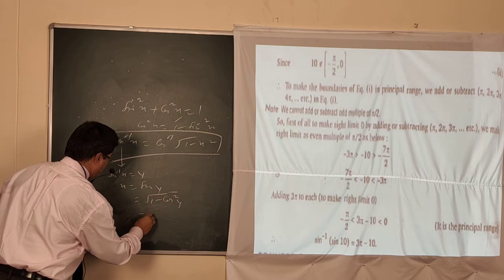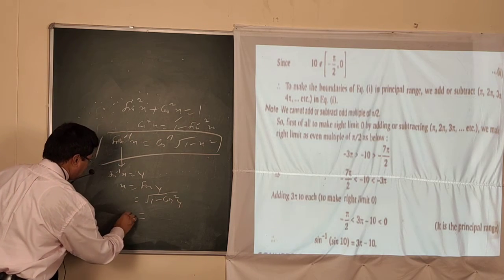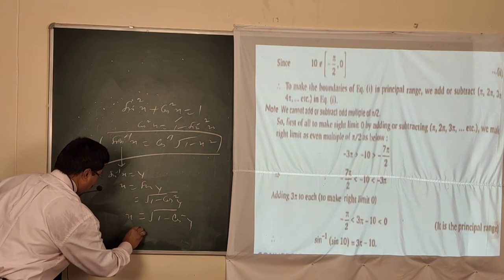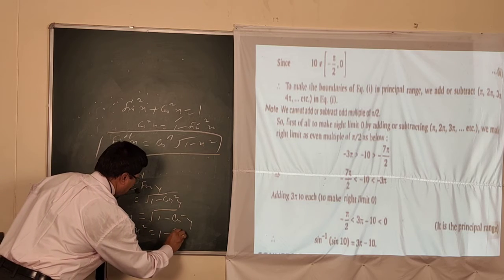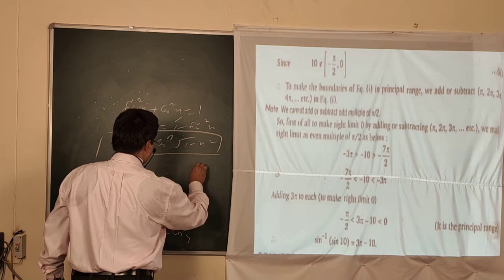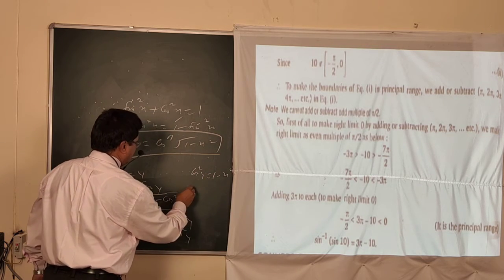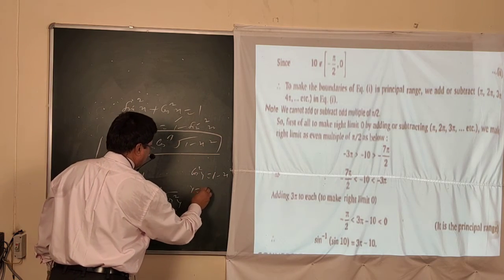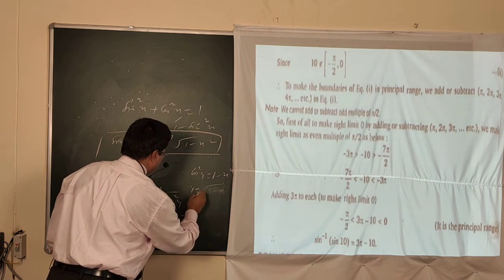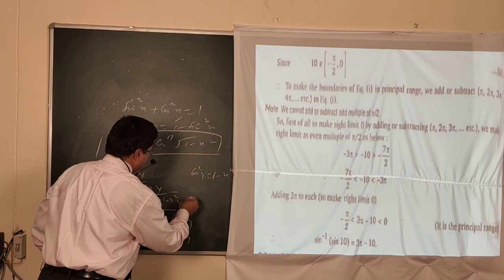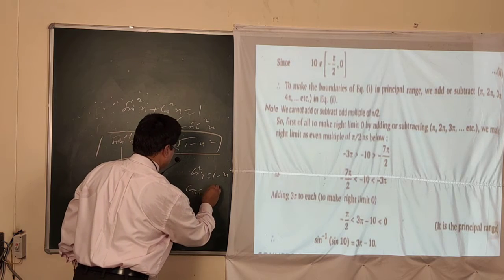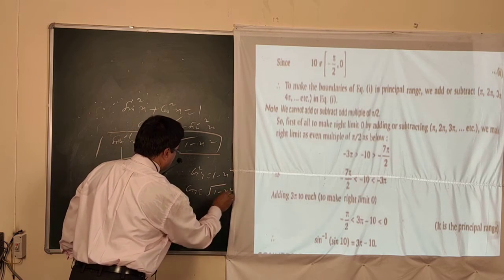So we see once again: sin⁻¹x = y, then x = sin y. You just convert sin y in terms of cos. sin y = √(1 - cos²y). This equals x. Squaring on both sides: x² = 1 - cos²y. Transferring, cos²y = 1 - x². Therefore cos y = √(1-x²). Then transferring that side and converting as an inverse function, y = cos⁻¹(√(1-x²)).